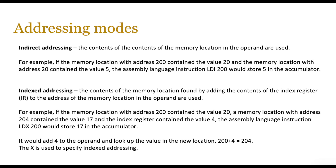Next is indirect addressing. Here, the contents of the memory location in the operand are used as a pointer to another address. If the memory location with address 200 contains the value 20, and the memory location with address 20 contains the value 5, the instruction LDI 200 would store 5 in the accumulator — because first you go to address 200, which points to the value 20, then you go to address 20, which contains 5, and that's what's loaded into the accumulator.